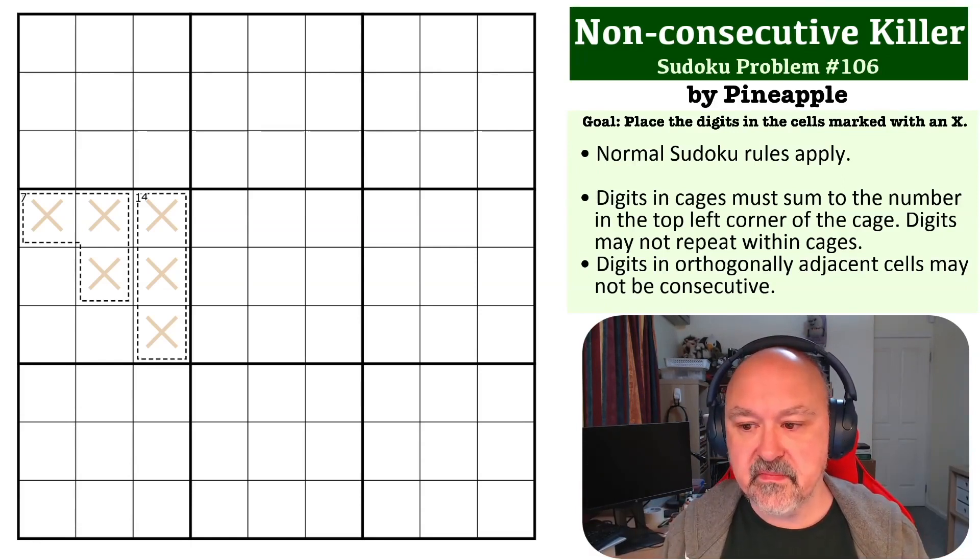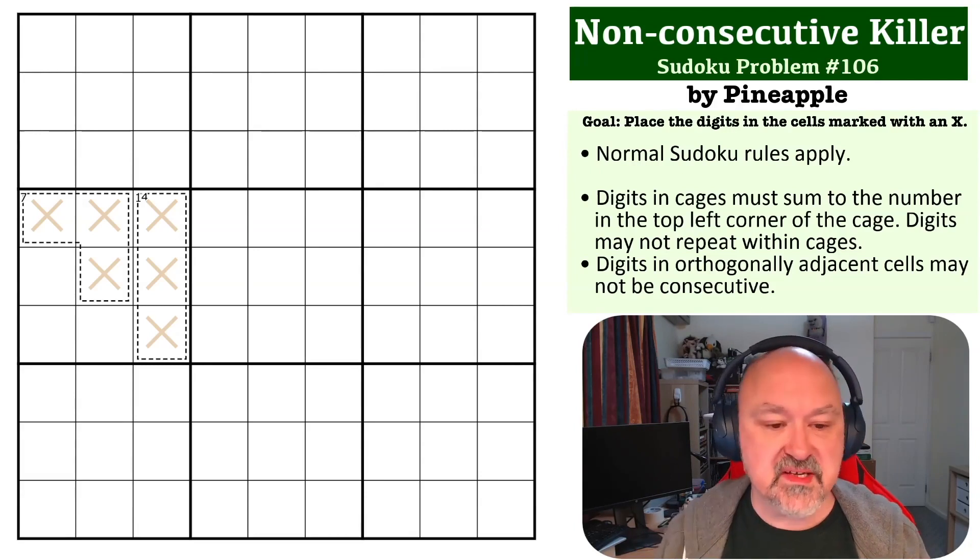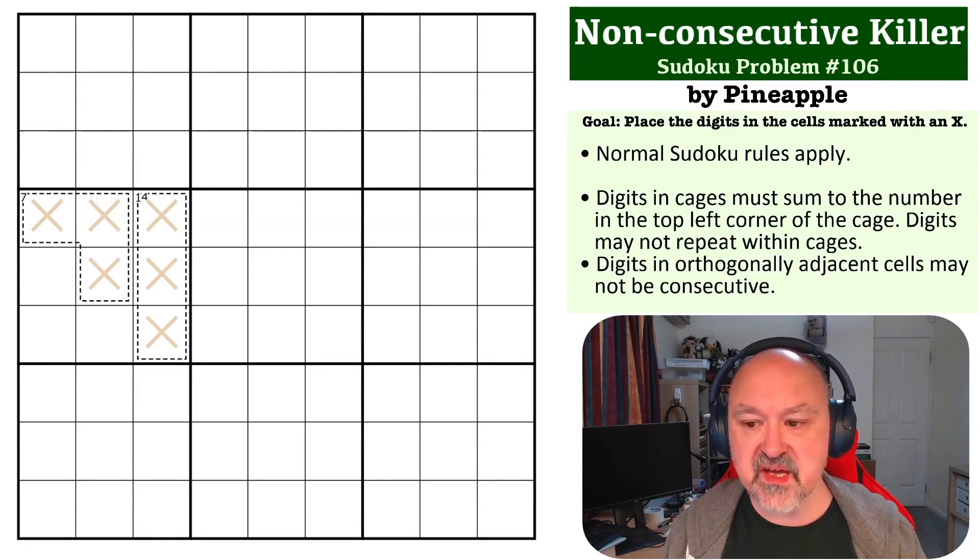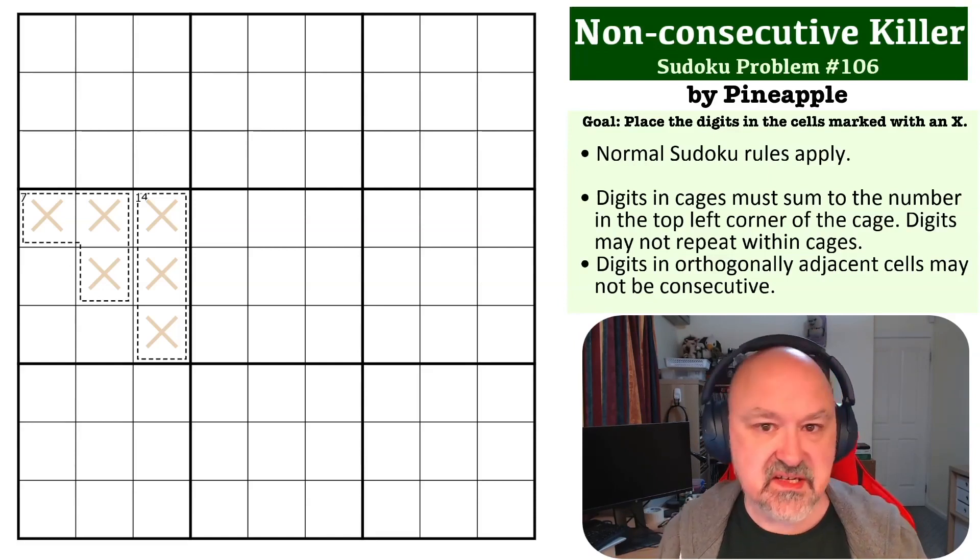The way the rules work is killer cages. Digits in cages must sum to the number in the top left corner of the cage, and for digits you're placing, they cannot be orthogonally adjacent to a digit that is consecutive with it.